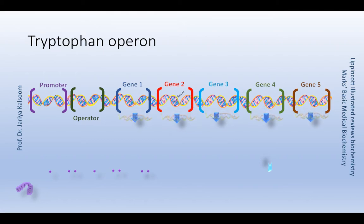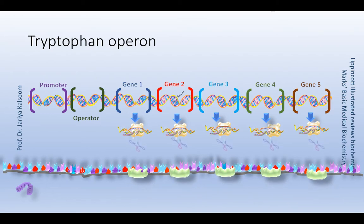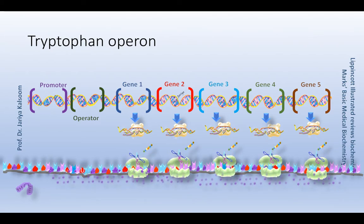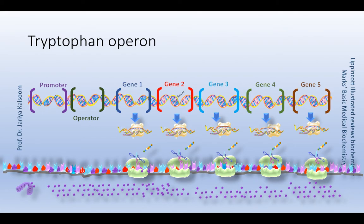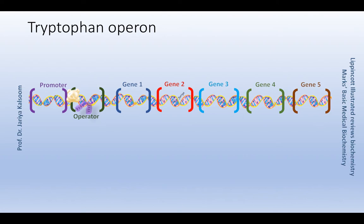Now coming to another operon — the tryptophan operon. The tryptophan operon consists of five genes that code for the enzymes required for the synthesis of the amino acid tryptophan. This operon can be inhibited by tryptophan itself when tryptophan binds to the repressor protein and helps in binding of the repressor protein to the operator. So tryptophan serves as a corepressor.